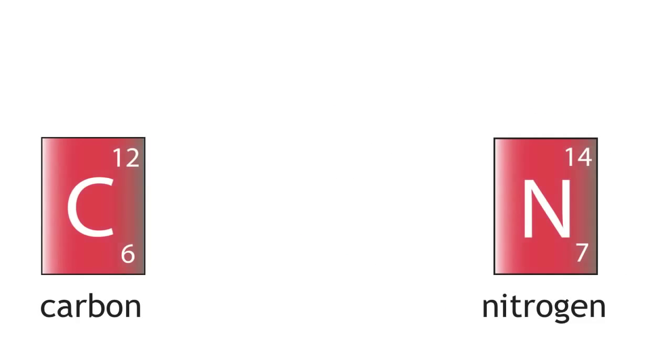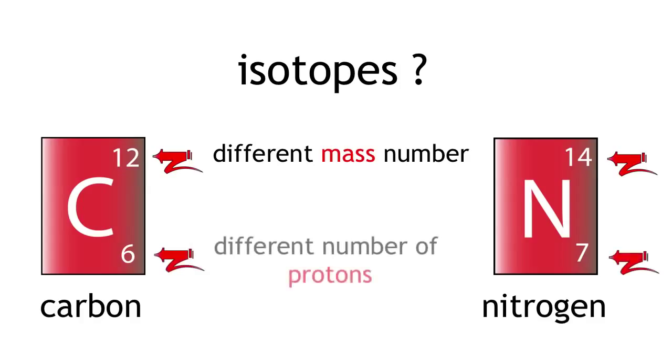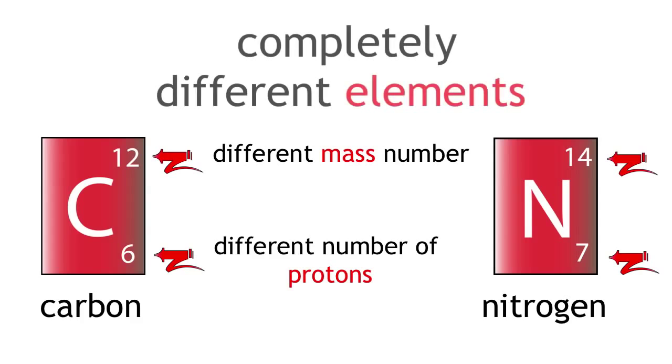If we look at carbon and nitrogen, are they isotopes? They have different mass numbers but they also have a different number of protons. Therefore, they are not isotopes. They are completely different elements.